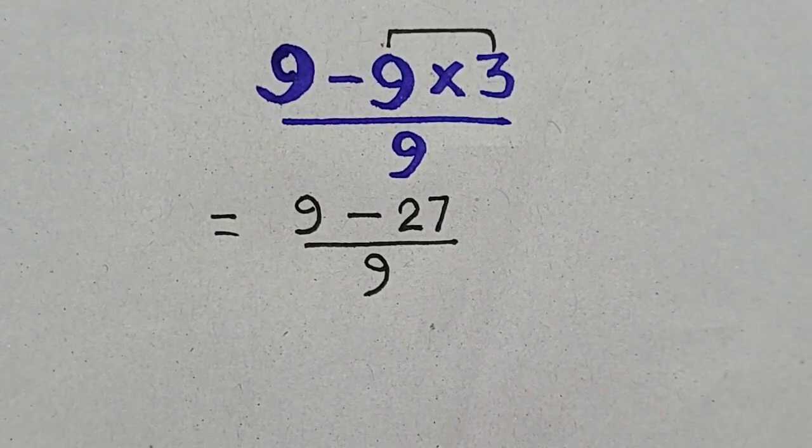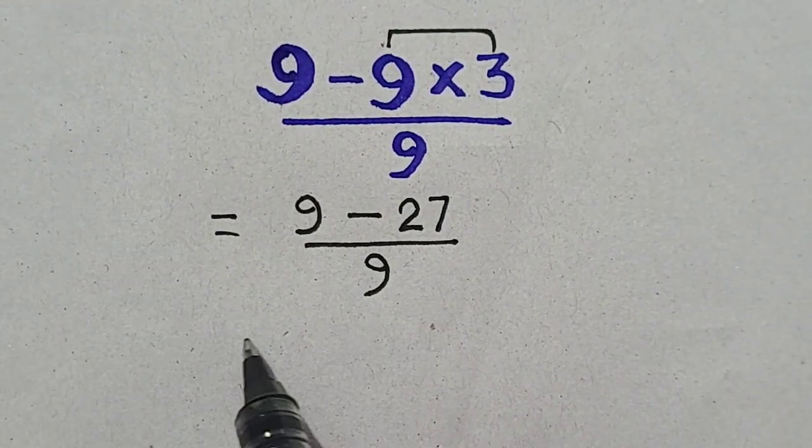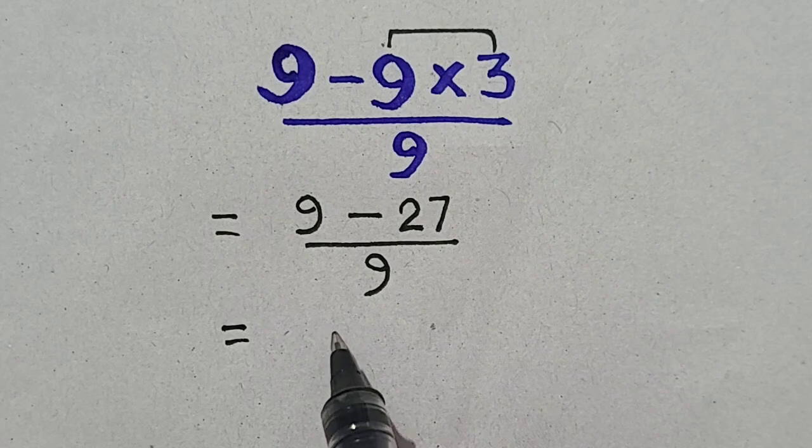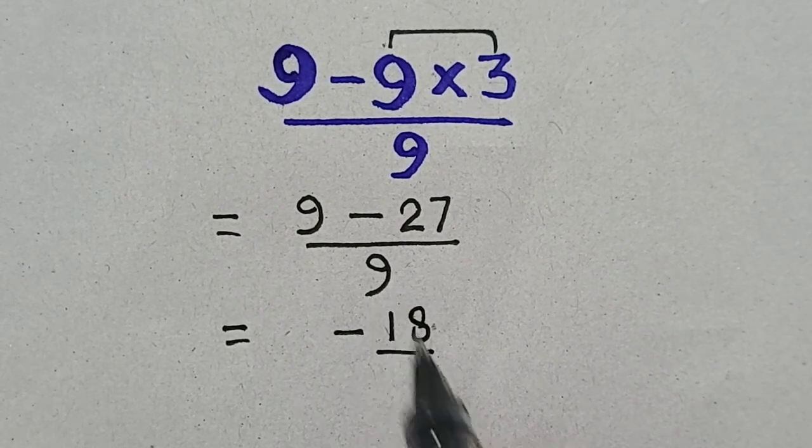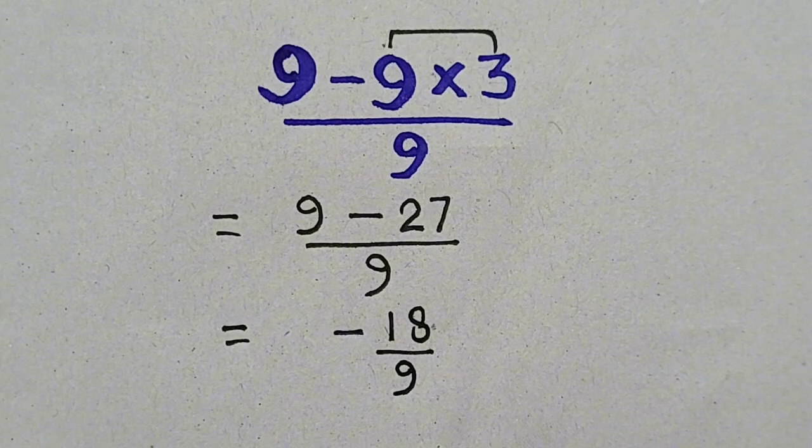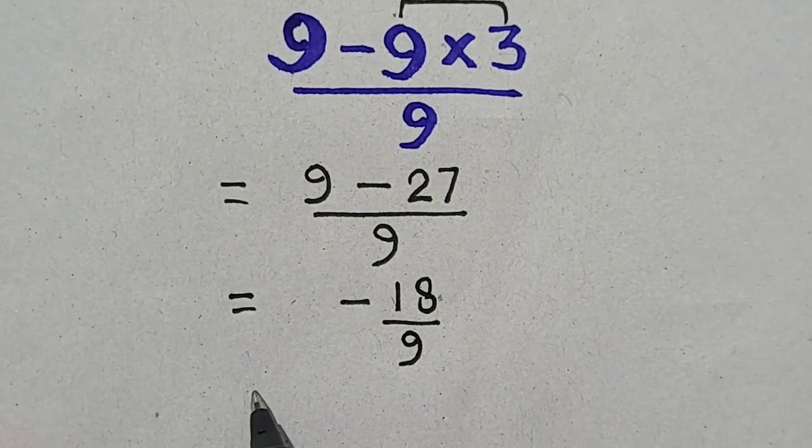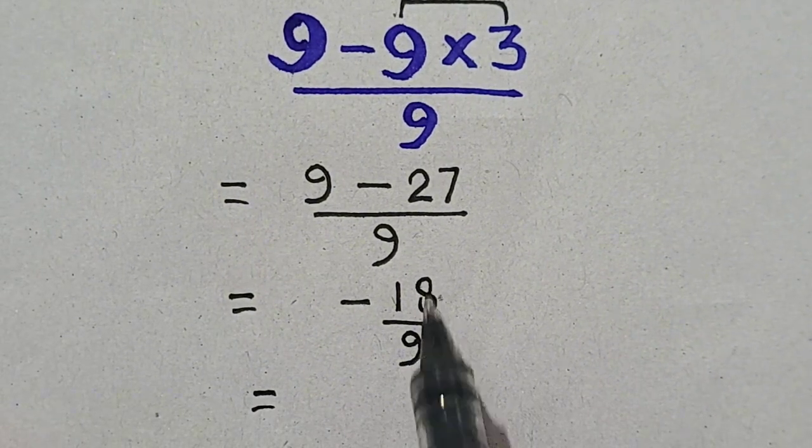Hence, if we subtract, 9 minus 27, we will get negative 18, and in the denominator we have 9.